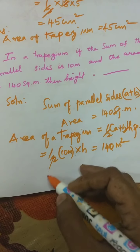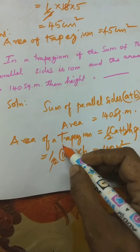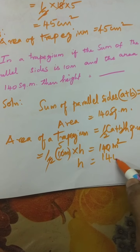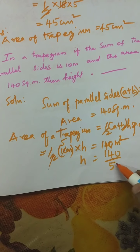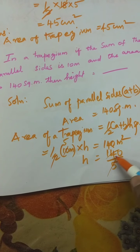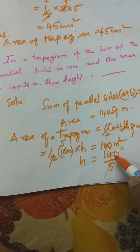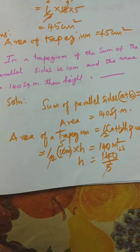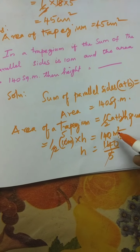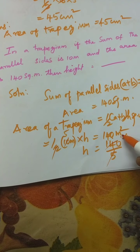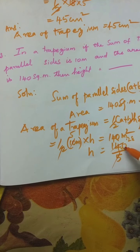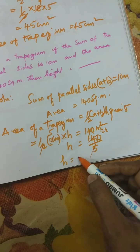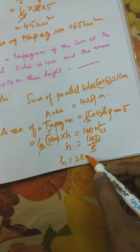You can cancel 10 and 2 to get 5. Then keep H here: 140 divided by 5. You cancel 5 and 140 — 5 twos are 10, 8 fives are 40. So H is equal to 28 meter.